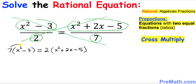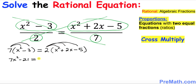Next, we distribute and multiply. On the left side this gives us 7x squared minus 21. Likewise, distributing on the right side gives us 2x squared plus 4x minus 10.